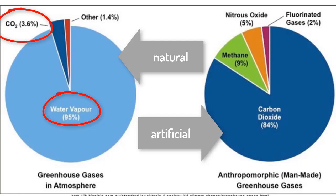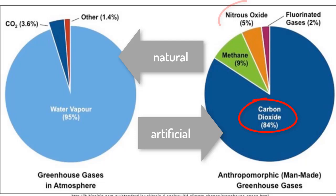Greenhouse gases occur in ecosystems in both natural and artificially placed molecules. Carbon dioxide and water vapor are both naturally occurring molecules that cycle within ecosystems, so of course we find them in the atmosphere and they contribute to global warming. Aside from natural processes, humans have created an unnatural environment that releases increased amounts of carbon dioxide, nitrous oxides, and methane into the atmosphere.